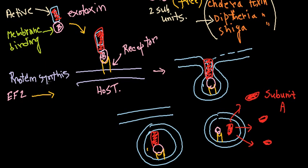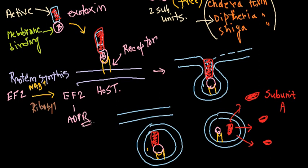The A subunit takes NAD+ and attaches the ribosyl group onto EF2, converting it to EF2-ADPR. This ADP-ribosylation inactivates EF2. As a result of the inactivation of EF2, protein synthesis is halted and completely blocked.